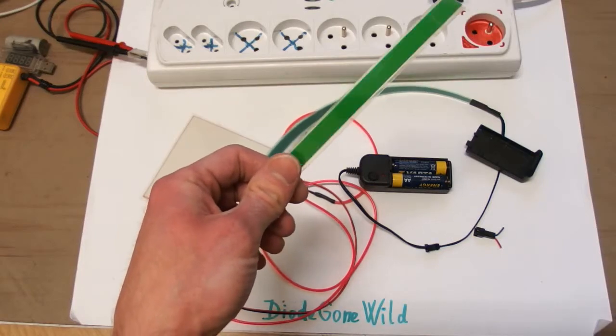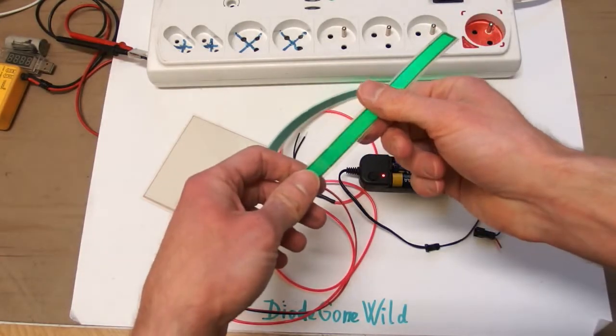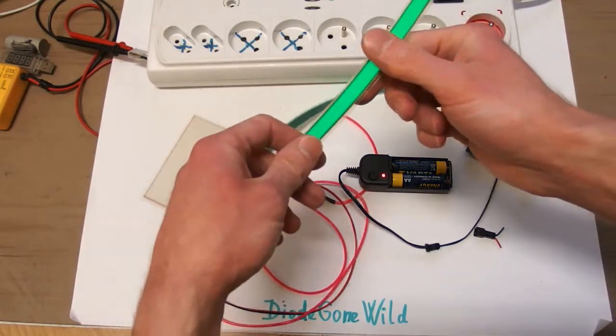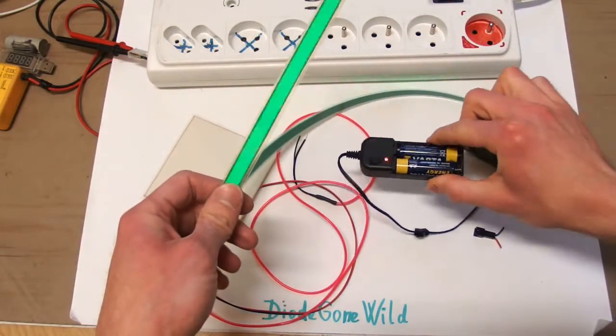So today we have another teardown and this is going to be this electroluminescent strip, electroluminescent panel and electroluminescent wire, and it's battery operated driver.